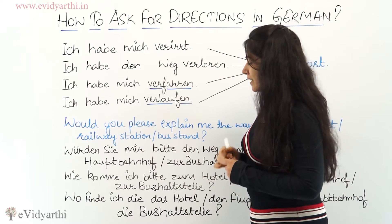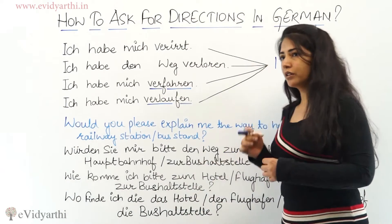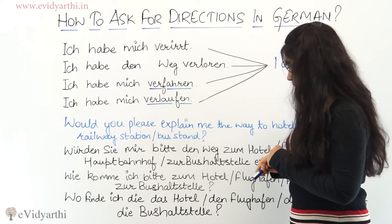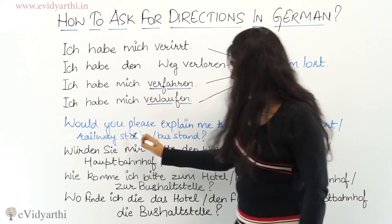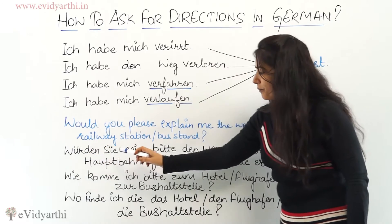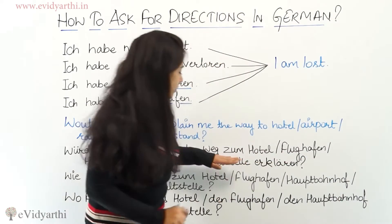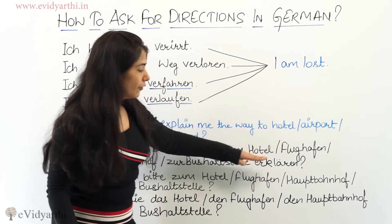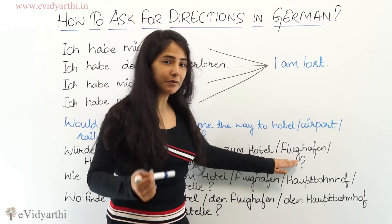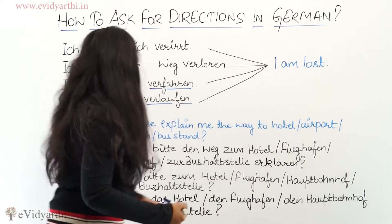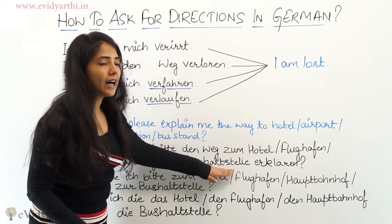Now, how would you ask for directions if you want to get to your hotel, airport, or a bus stand? You would ask: 'Würden Sie mir bitte den Weg zum Hotel erklären?' Hotel means hotel. 'Flughafen' means airport — so 'zum Flughafen.' 'Zum Hauptbahnhof' means railway station. Or 'zur Bushaltestelle' for bus stand.